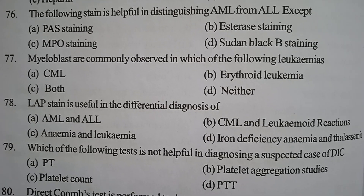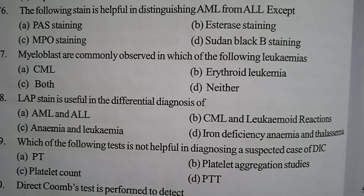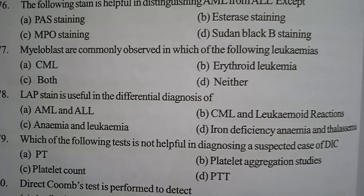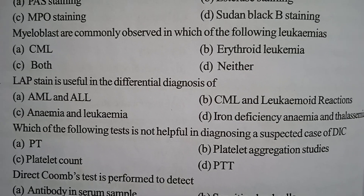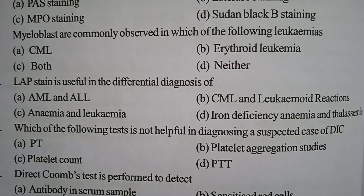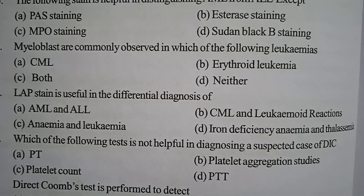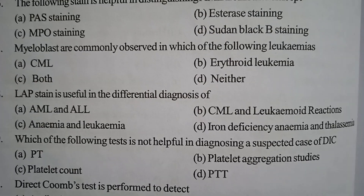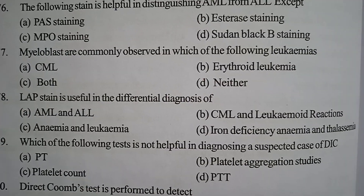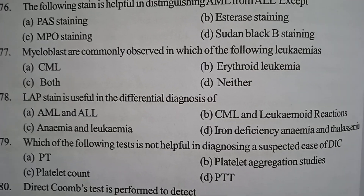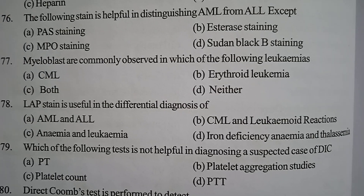Next one: which of the following tests is not helpful in diagnosing a suspected case of DIC (disseminated intravascular coagulation)? Option A: PT. Option B: platelet aggregation studies. Option C: platelet count. Option D: PTT (partial thromboplastin time). Correct answer: option B, platelet aggregation studies.